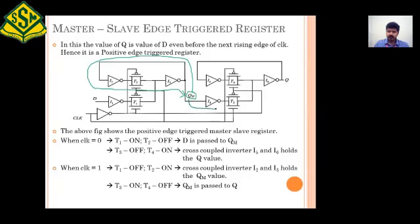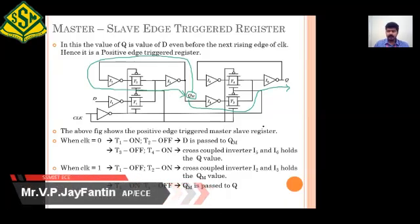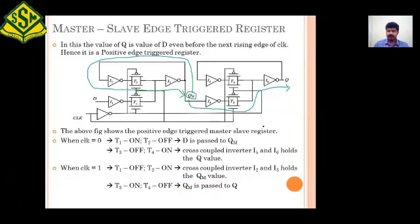...it passes through I4, T3, I6 and finally reaches Q. So when clock is equal to zero the master is active and slave is in off condition; when clock is equal to one the master is in off condition and slave is active — that's how the total clock cycle is utilized during operation of a master-slave edge-triggered register. The major drawback of this circuit is that eight transistors are utilizing the clock, making it a high power-consuming circuit. In order to reduce power consumption, we go for the optimized circuit with a lesser number of transistors.